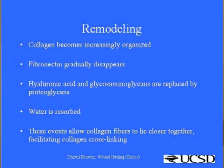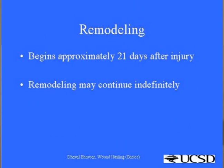Fibronectin gradually disappears after wound healing completes. Hyaluronic acid and glycosaminoglycans are replaced by proteoglycans. The residual water is resorbed from the wound. Due to resorption of water, the wound volume reduces and allows collagen fibers to lie close to each other, enabling them to cross-link and improve the quality of the wound matrix. Remodeling begins approximately 21 days after injury and continues indefinitely.